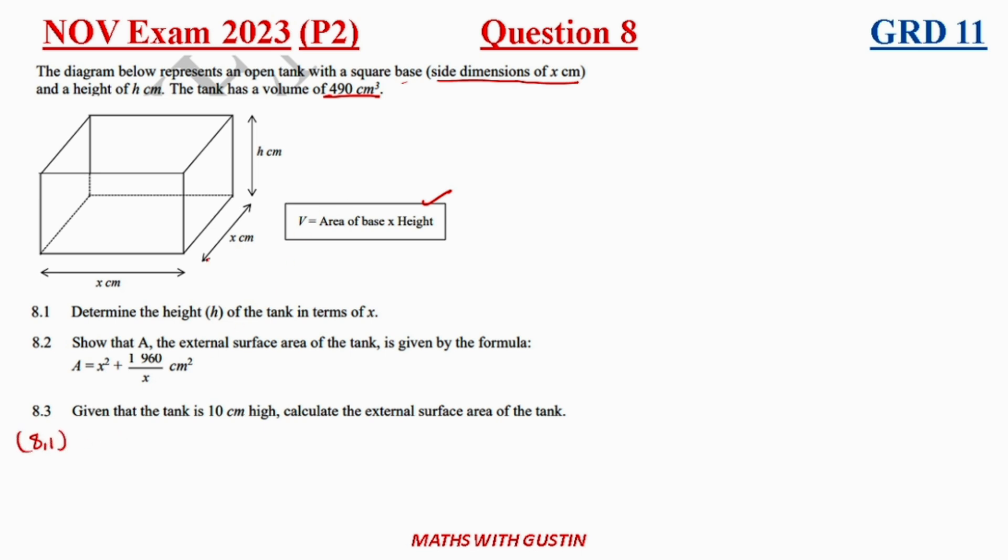So if we're given the volume, volume would have to be equal to area of a base. Area of a base which is this one here. What is the area of a square? It's going to be side times by the side. You know the area of a base and then they also said multiply by height. What is our height? Our height is just going to be h.